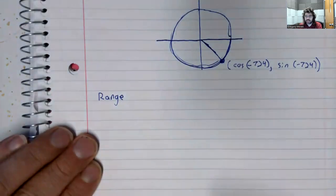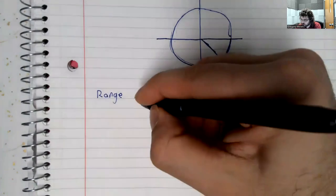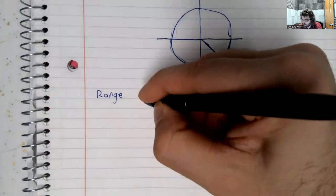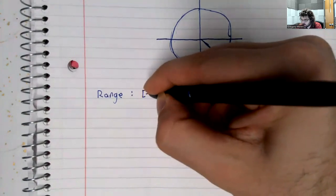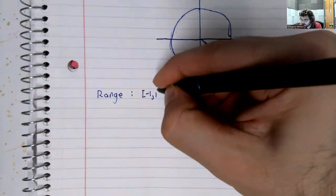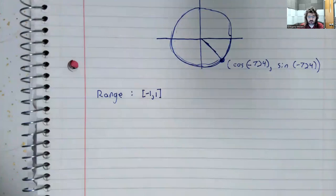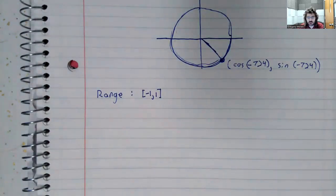So the sine and the cosine both have the same range, the numbers between negative 1 and 1. Why is that?